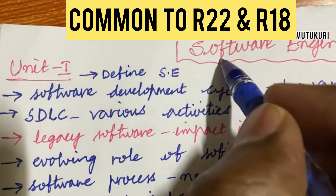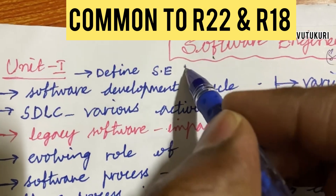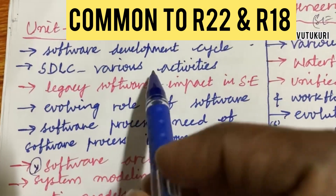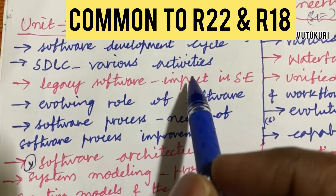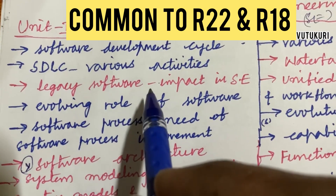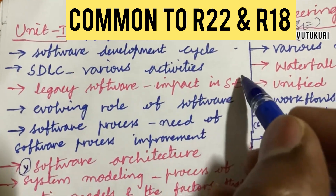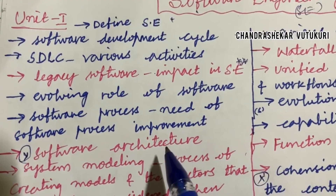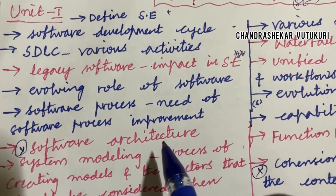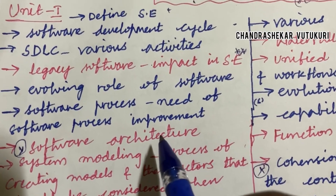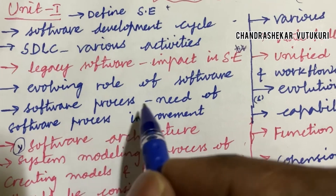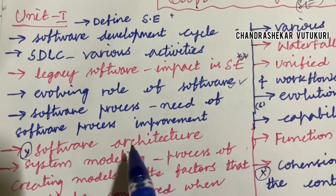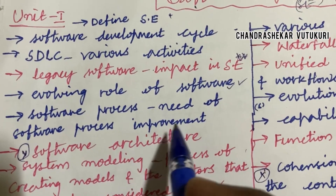The first and foremost question is the term defined: Software Engineering — this may be a two or three mark question. Software Development Cycle (SDLC), various activities, and legacy software and its impact in software engineering may be a short question. The evolving role of software is said to be a likely short question, as well as software process and the need for software process improvement.